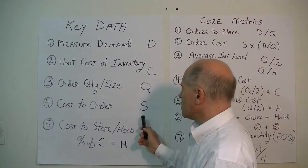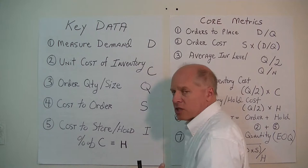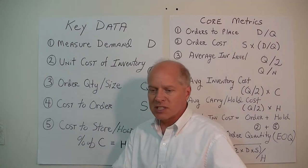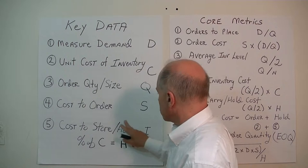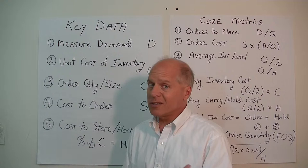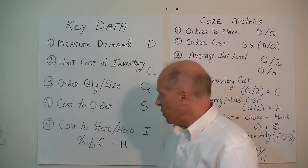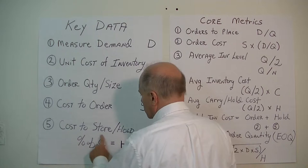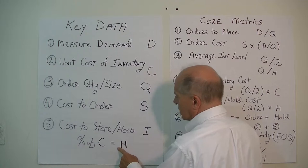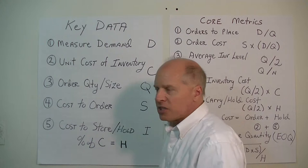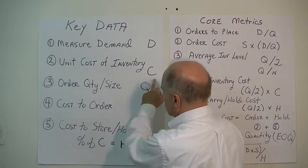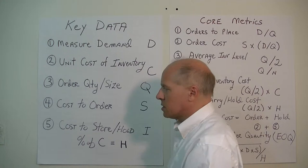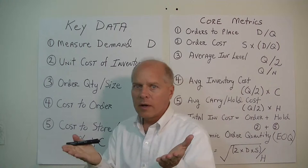When we hold inventory, we have costs associated with storing it. In a retail business, inventory occupies floor space. A car dealership, for example, pays property taxes on vehicles sitting on the lot. We label the holding cost rate as i, and we can express it as a percentage of the unit cost, labeled H. So if the unit cost is $10 and i is 10%, then H equals $1 holding cost per unit.